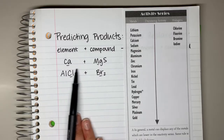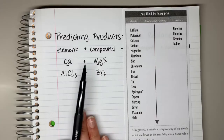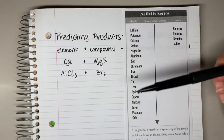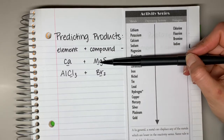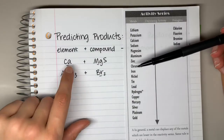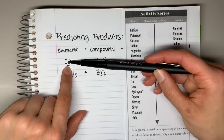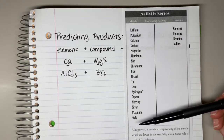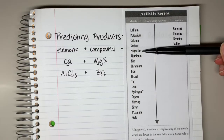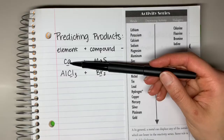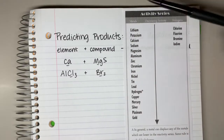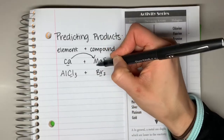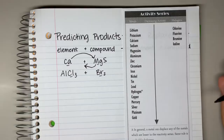When you have two metals in the reactants for a single replacement reaction, and we talked about how calcium is trying to replace magnesium, you look on the metals side of the activity series. The lone element that is trying to replace the metal in the compound needs to be higher. In order for calcium to steal the sulfur away and replace the magnesium, calcium has to be higher than magnesium on the activity series. Calcium is higher than magnesium, so it will replace it in the compound, kicking the magnesium off to be the lone element.